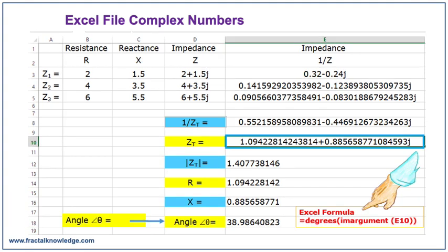If you want to know the angle in degrees of the impedance, the Excel formula is equals DEGREES, open quantity, IMARGUMENT, open quantity, choose E10, close quantity and close quantity, enter. You've got the angle 38.98 degrees.